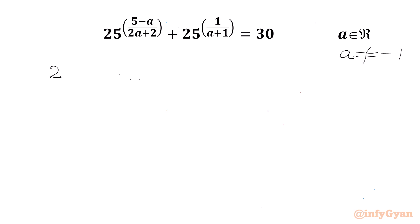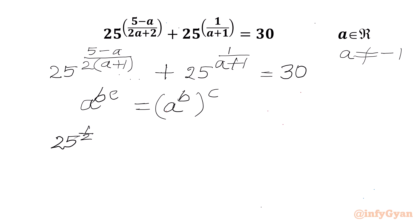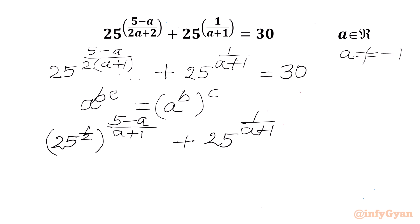Now I will write the equation as 25 to the power (5 minus a) over 2, with (a plus 1) common in the bracket. Then we have 25 raised to the power 1 over (a plus 1), equal to 30. We know that a^(b·c) can be written as (a^b)^c, so I will write 25 to the power 1/2, whole raised to the power (5 minus a) over (a plus 1), then 25 to the power 1 over (a plus 1) equal to 30.